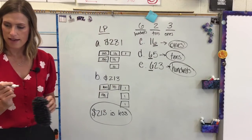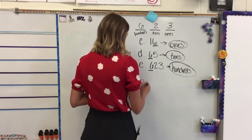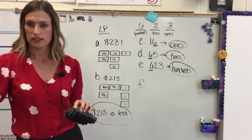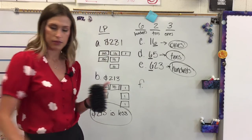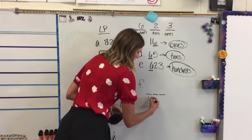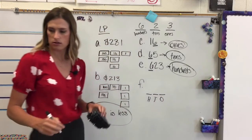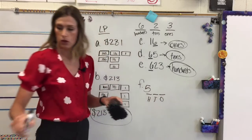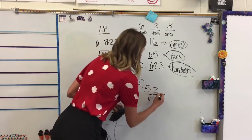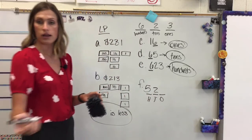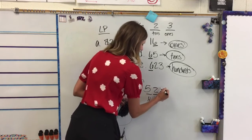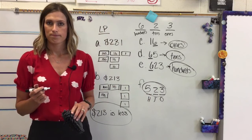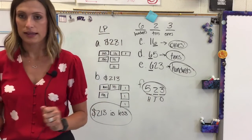Let's take a look at F. F says: use three digits to write a number equal to five hundreds, two tens, and three ones. If we've got our hundreds, tens, ones — five hundreds means a five in the hundreds place, two tens means a two in the tens place, and three ones means a three in the ones place. So we get five hundred twenty-three. Excellent. That's all of your lesson practice for today.